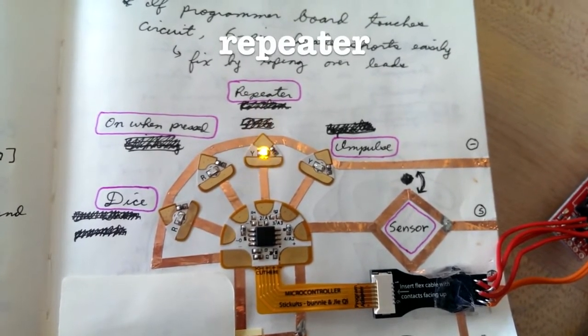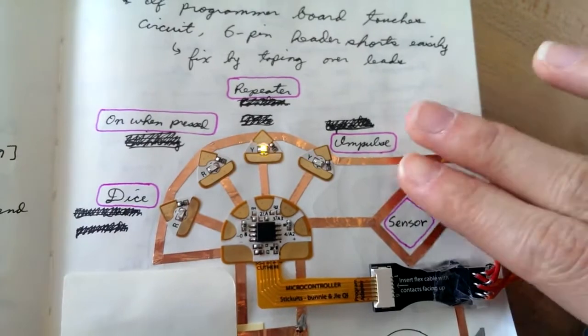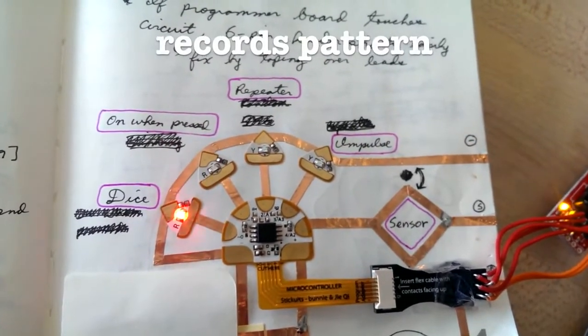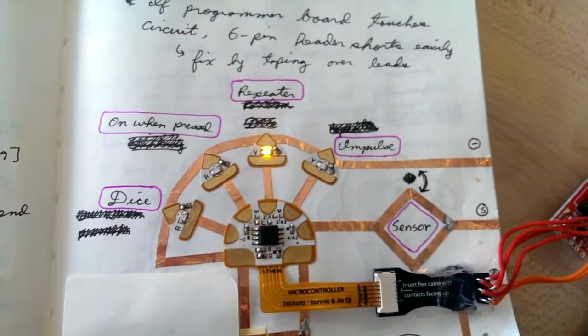Next, in the middle, you have the repeater, which repeats the pattern that you press on loop. Until you do a new pattern, then it plays the new pattern on loop.